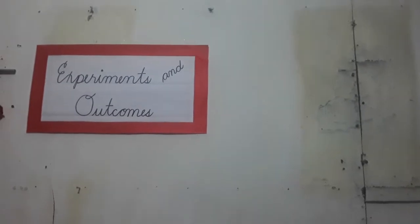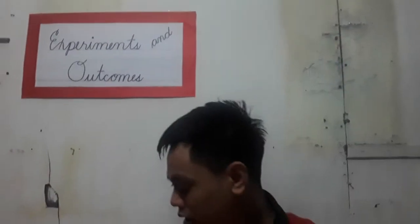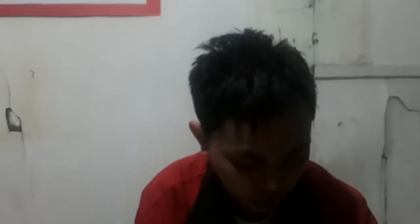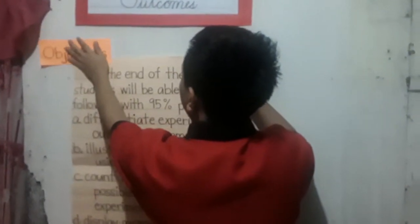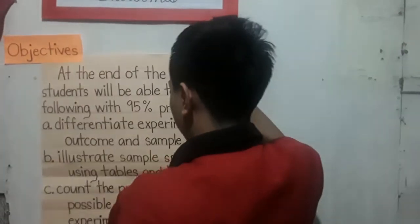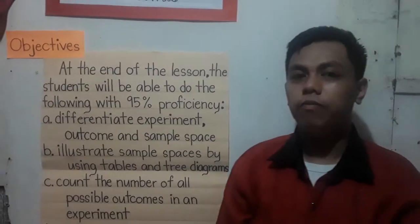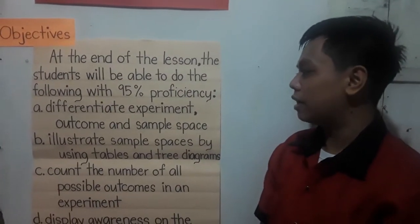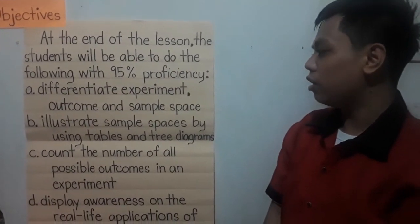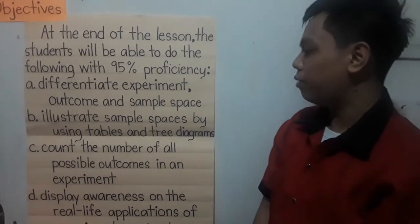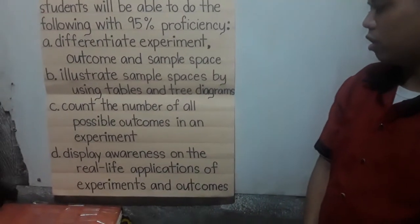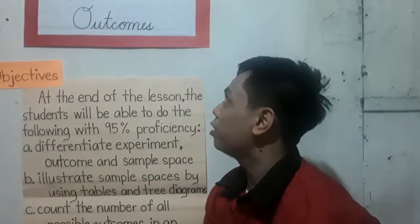Our lesson for today is all about experiments and outcomes. In this lesson, I want you to achieve the following objectives. At the end of the lesson, the students will be able to do the following with 95% proficiency: first, differentiate experiment, outcome, and sample space; second, illustrate sample spaces using tables and tree diagrams; third, count the number of all possible outcomes in an experiment; and lastly, display awareness on the real-life applications of experiments and outcomes.